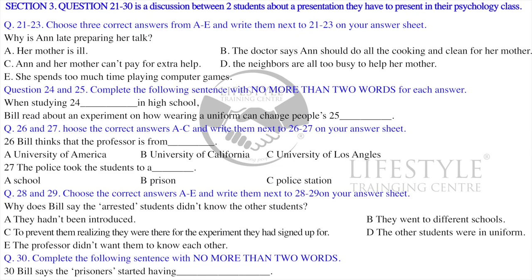So what happened in this experiment? Well, the prof got the local police to cooperate. One night, they went to about 20 students and arrested them. The poor guys didn't have a clue what for, and they didn't know it was the experiment they had volunteered for — it had been weeks since they volunteered. The cops took them to a school building that had been made to look like the inside of a prison or a police station. What they didn't know was that about eight other students were waiting there, dressed up as prison guards. The experiment took place in the early 70s, and the students dressed as prison guards were told to act like prison guards.